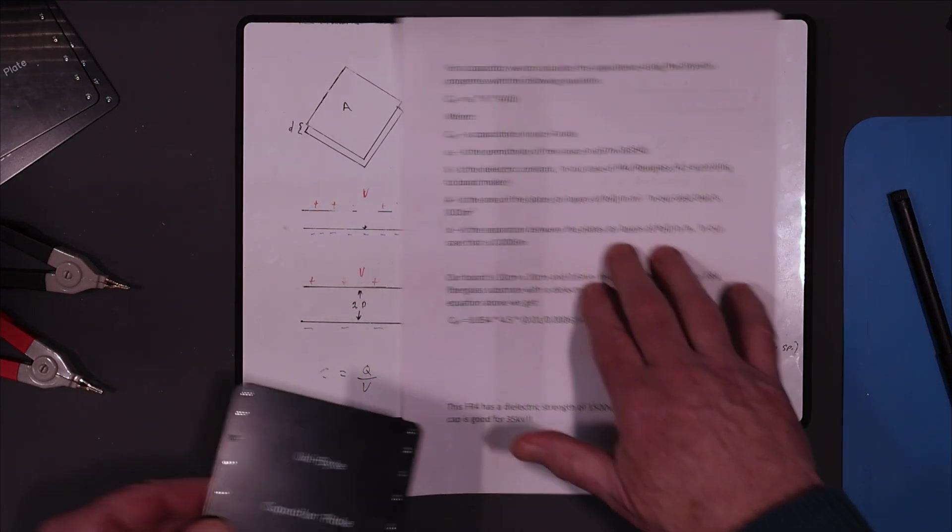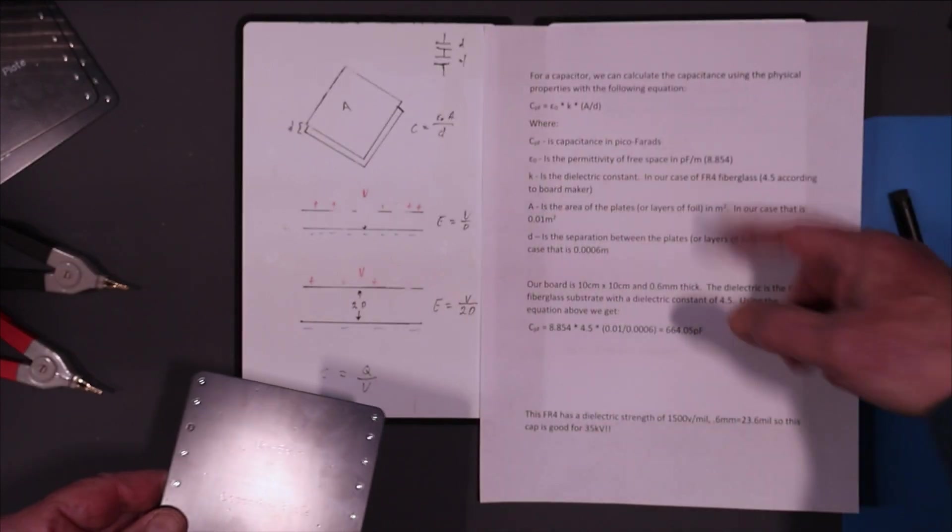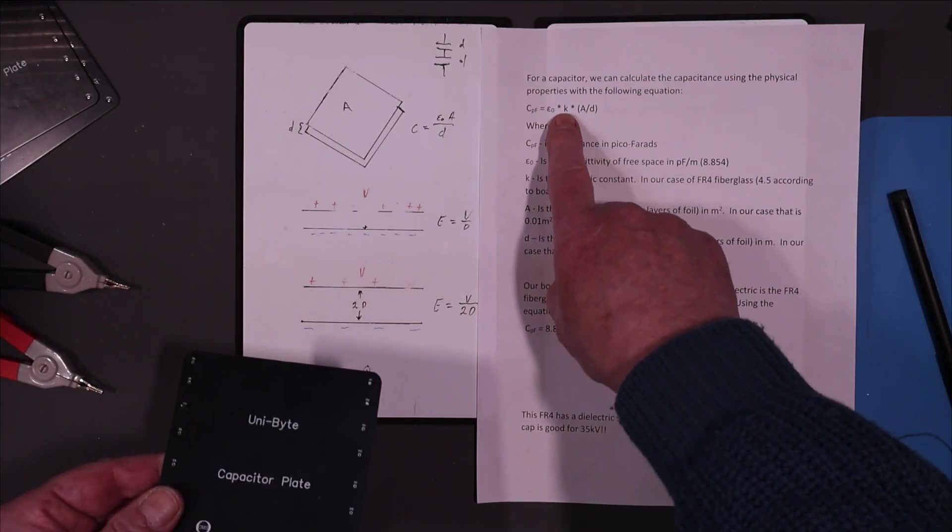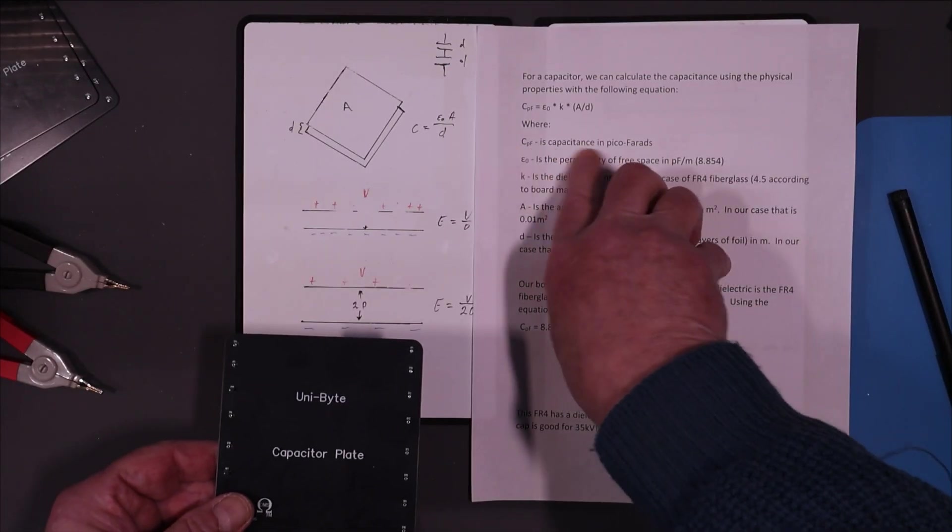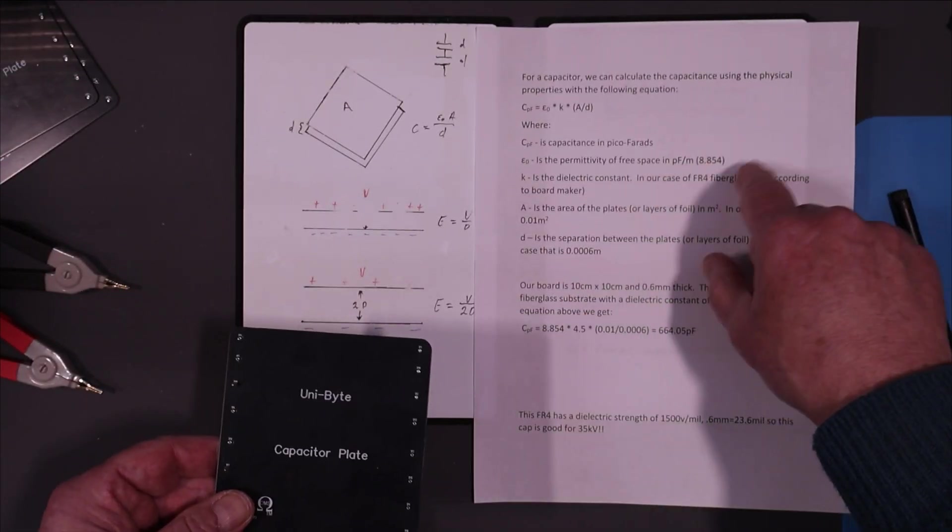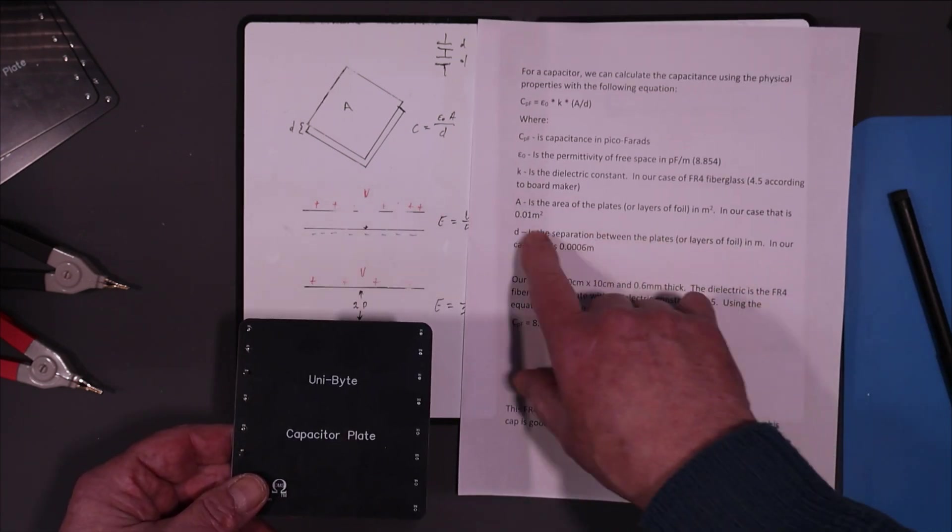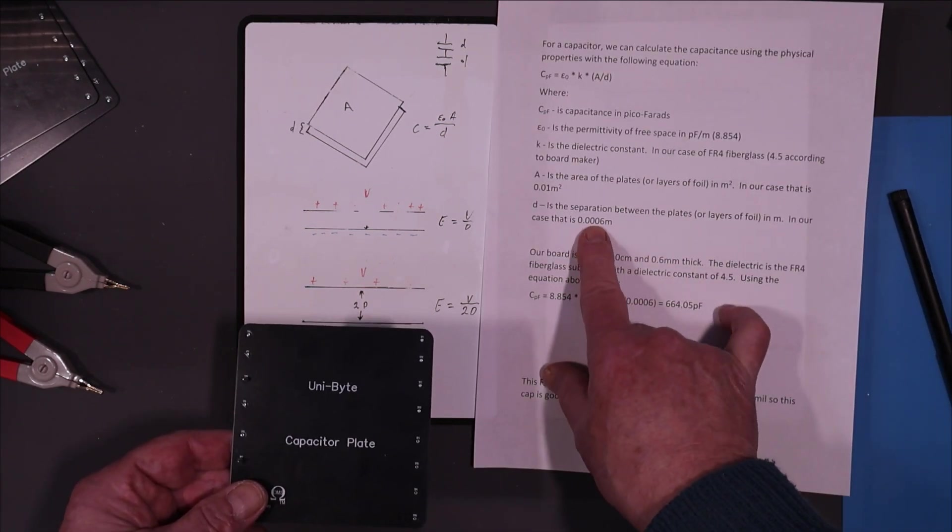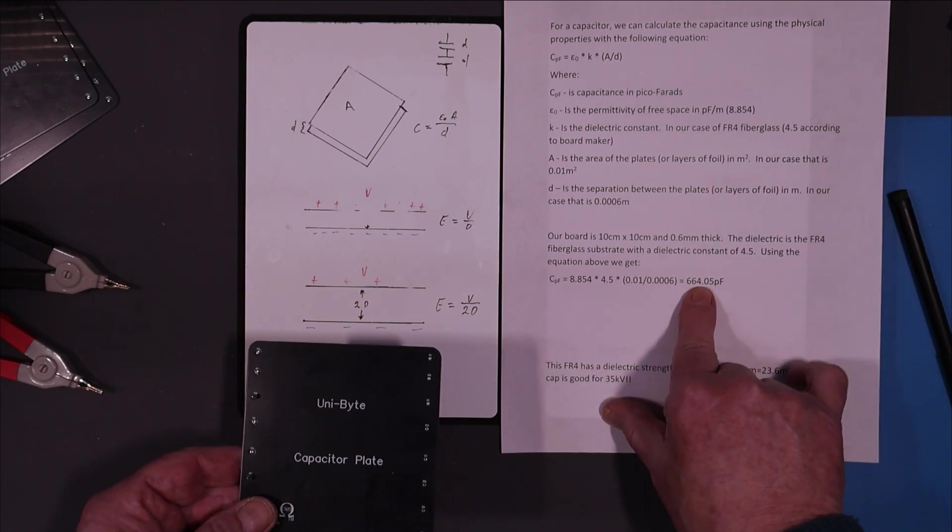We did these calculations here. This is basically just a statement of what I've been talking about for a capacitor. We calculate the capacitance using the physical properties with the following equations. The capacitance in picofarads equals E0, which is the permittivity of free space, times K, the dielectric constant of the material in between, multiplied by the area divided by the distance of separation. E0 is the permittivity of free space in picofarads per meter. K is our dielectric constant, 4.5. A is the area of the plates, 0.01 square meters. D is the separation of plates, 0.0006 meters. If we do all that calculation, we find that our capacitance in picofarads should equal 664.